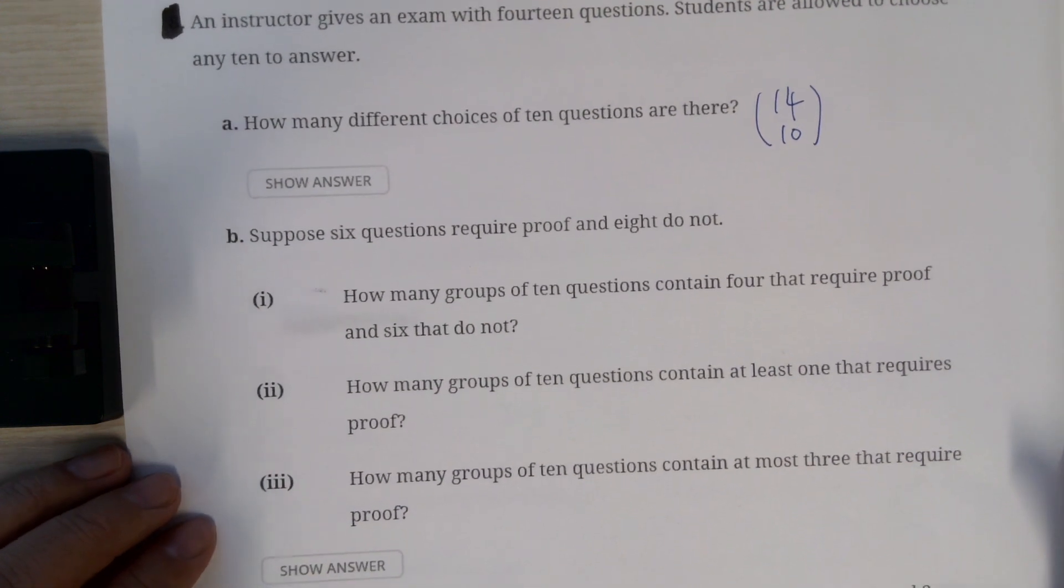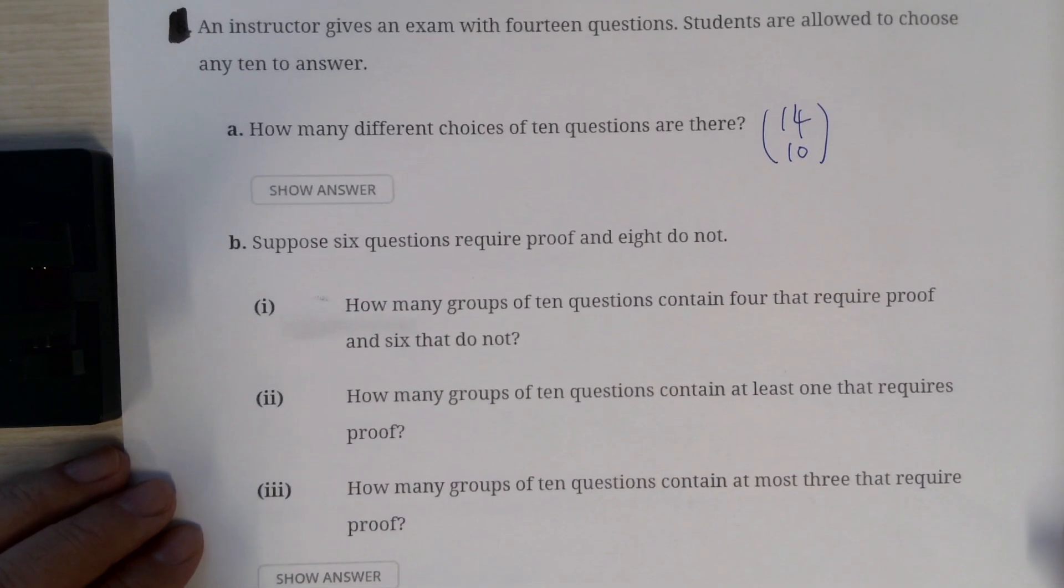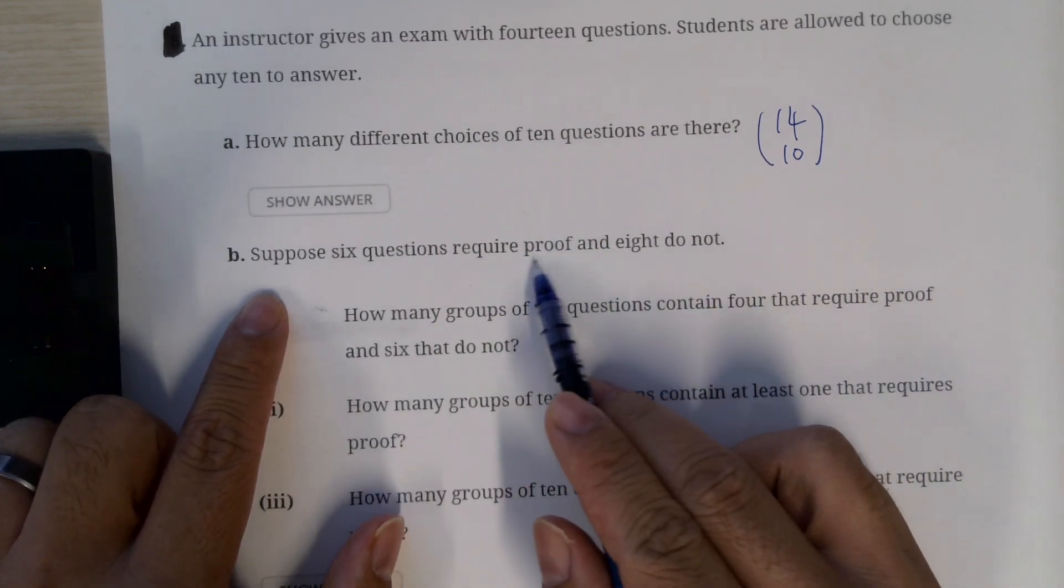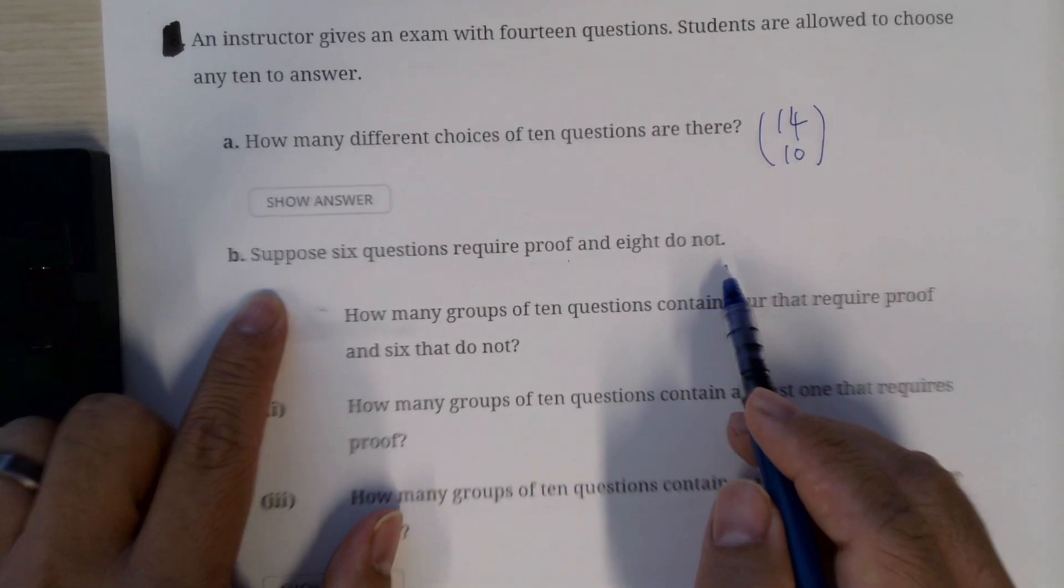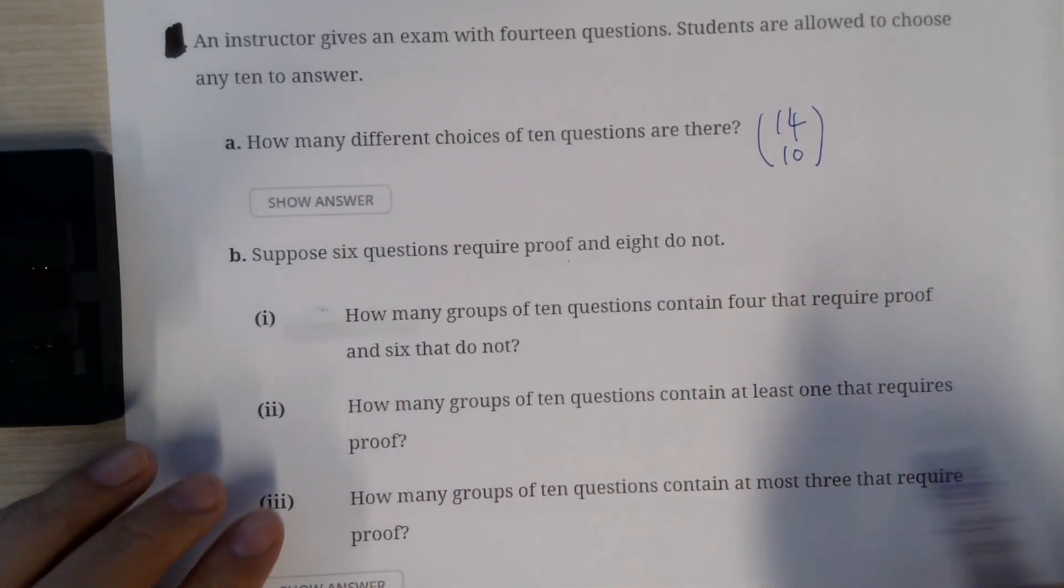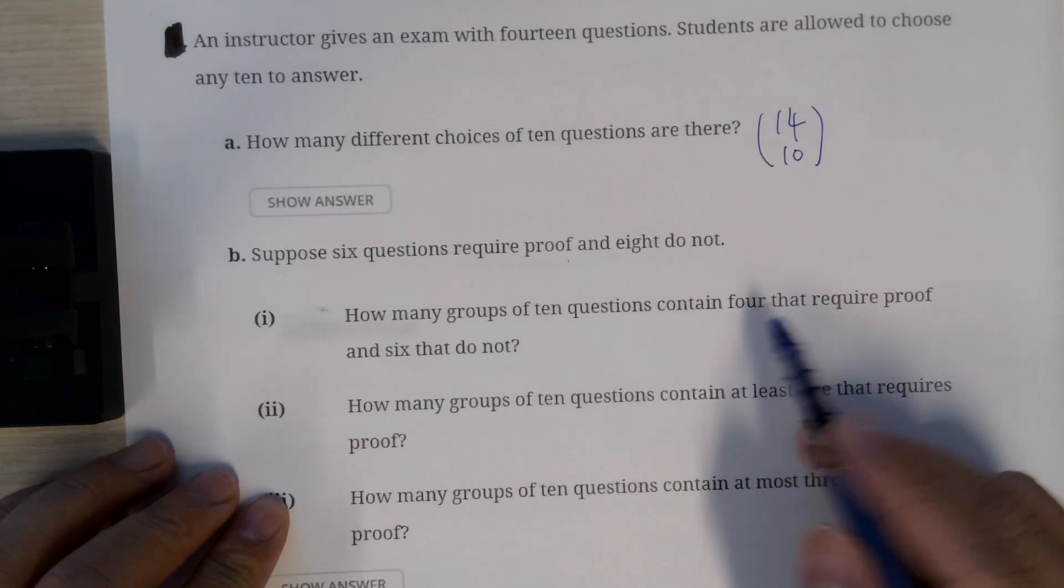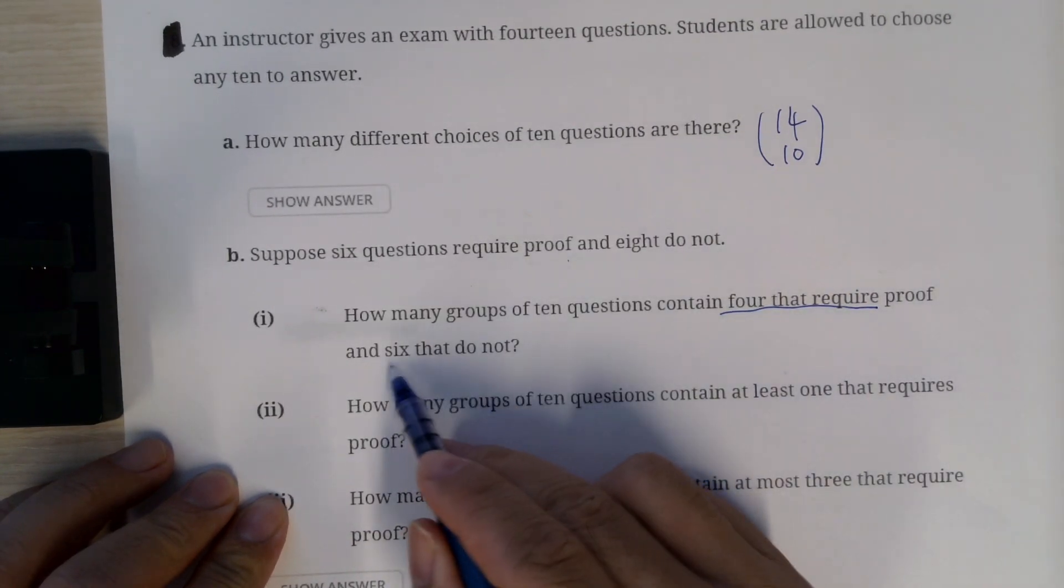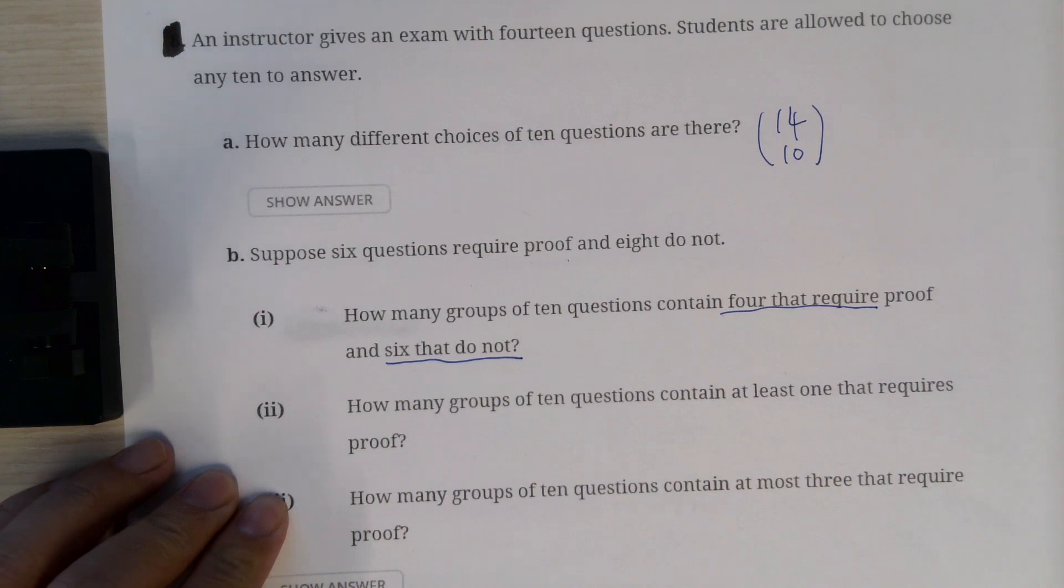Then starting from here, we get a little bit more involved. It says suppose 6 questions require proof and 8 don't. So how many groups of 10 questions contains 4 that require proof and 6 that don't?